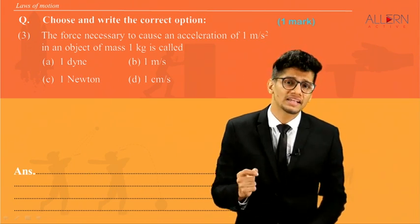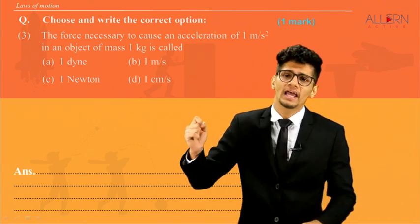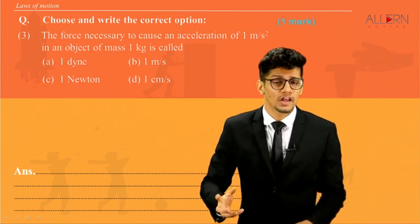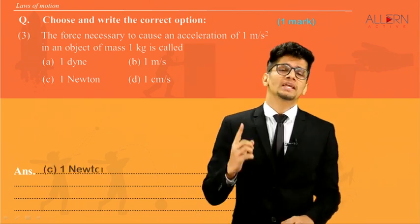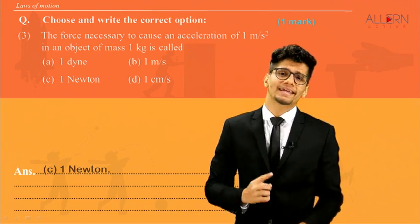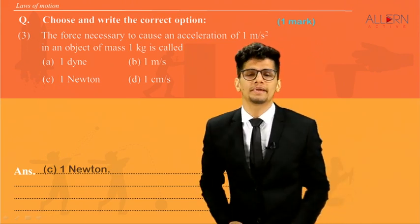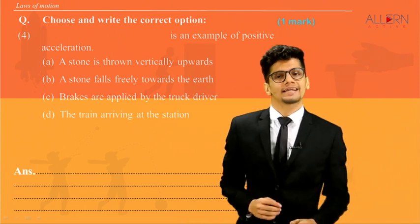Next question. The force necessary to cause an acceleration of 1 meter per second square in an object of mass 1 kg. We know the formula, right? 1 newton is equal to 1 meter per second square into 1 kg or 1 kg into 1 meter per second square.